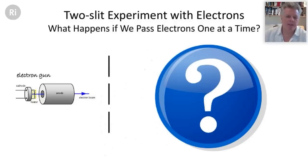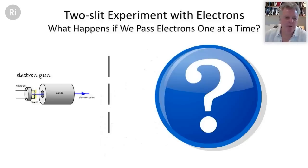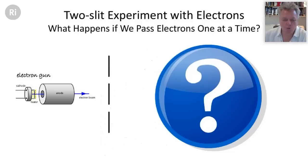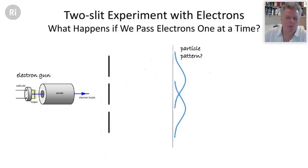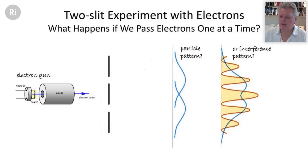So can we do a two-slit interference experiment with electrons? Imagine an electron gun — those familiar from old cathode-ray televisions — shooting electrons at a sheet with two holes in it instead of a screen. Do we expect a particle pattern, where electrons shoot through either one hole or the other? Or would we expect to see an interference pattern instead?